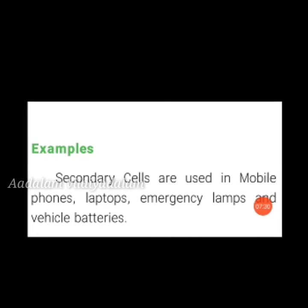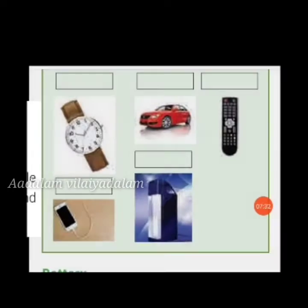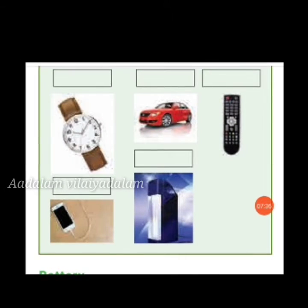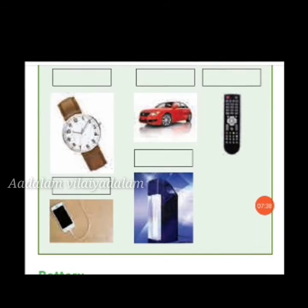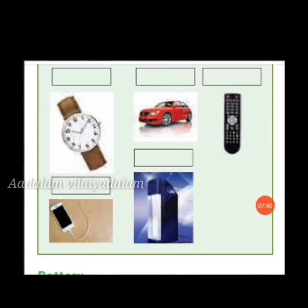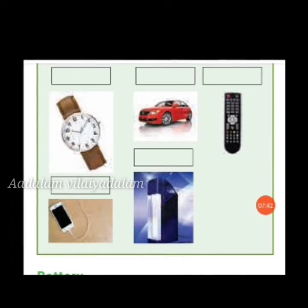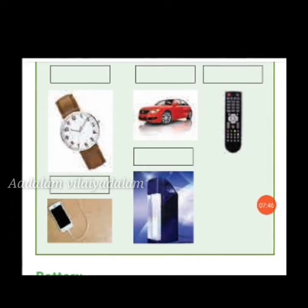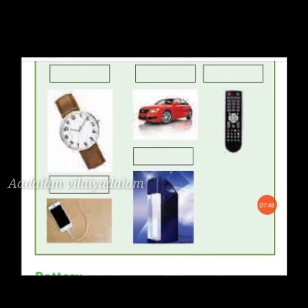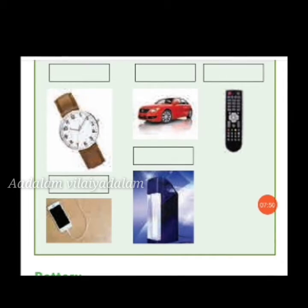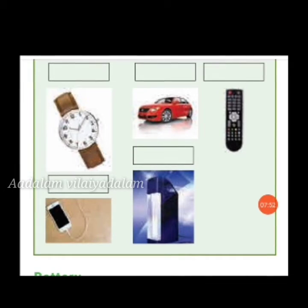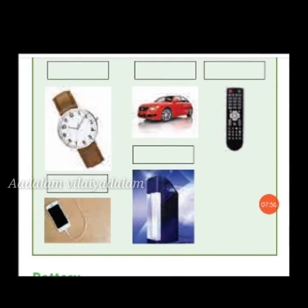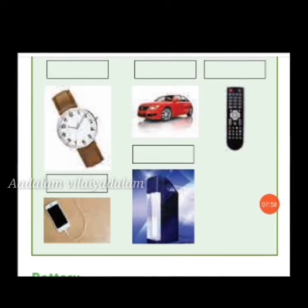Here is a project activity: take a chart and stick pictures of primary and secondary cells. From the given pictures, identify which ones use primary cells and which use secondary cells. Mark primary cells as P and secondary cells as S.